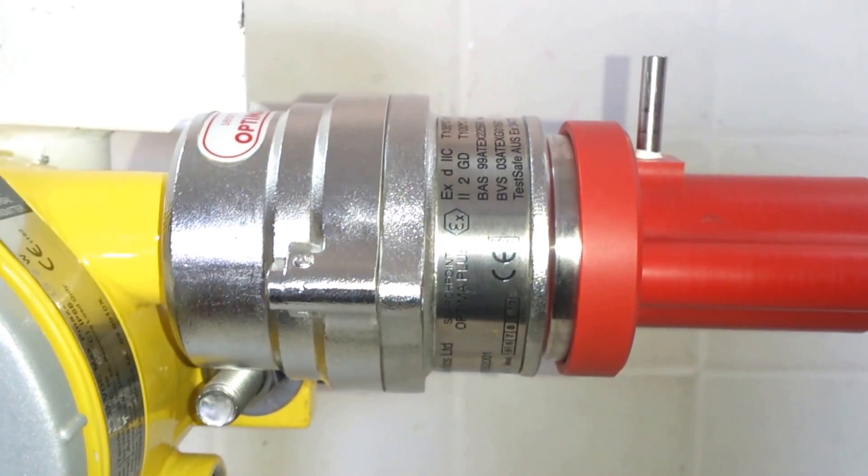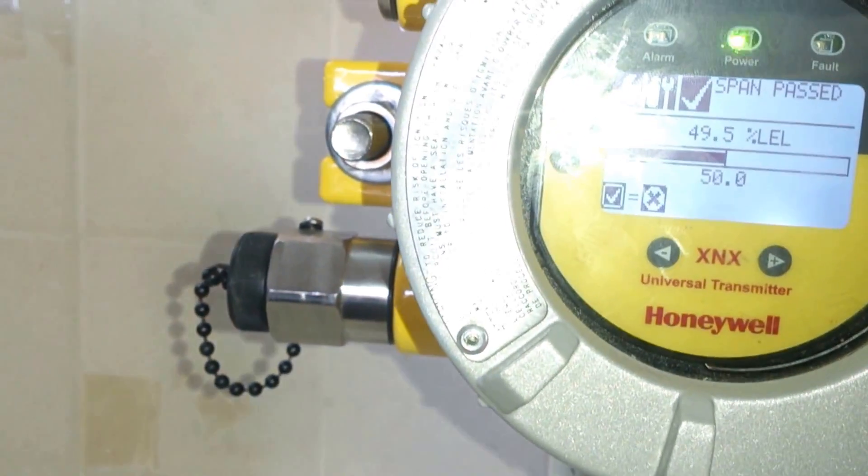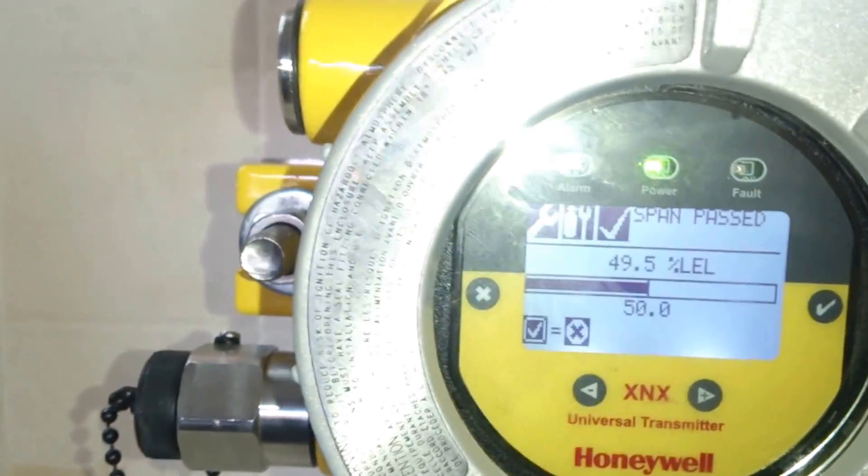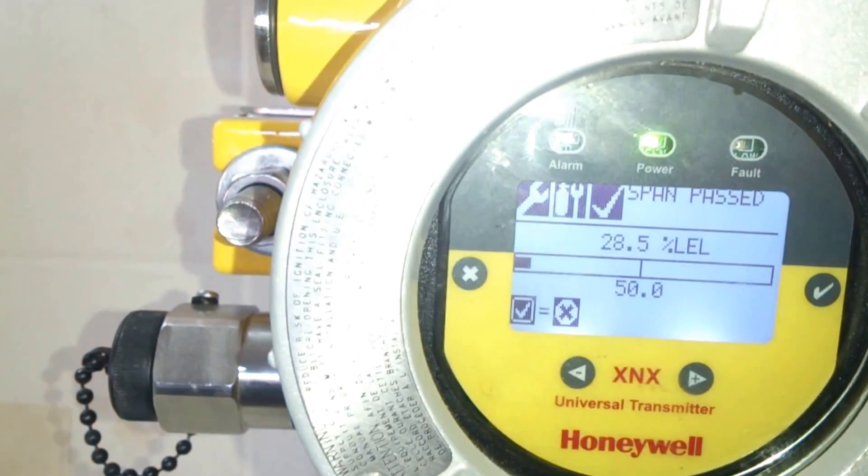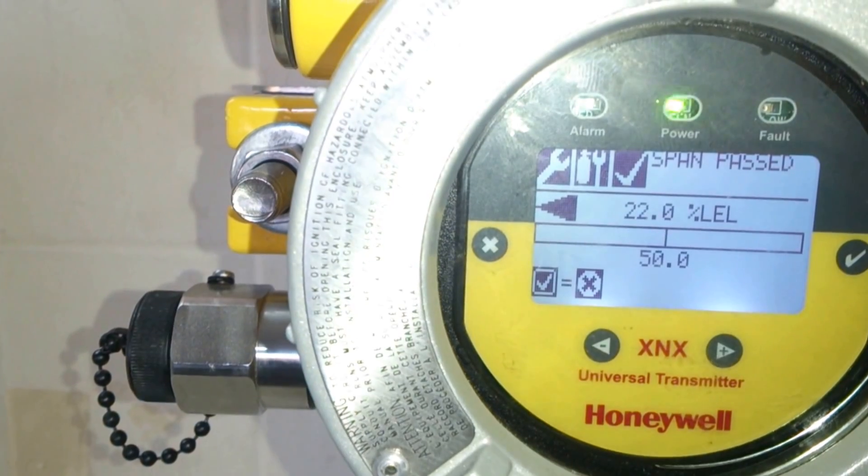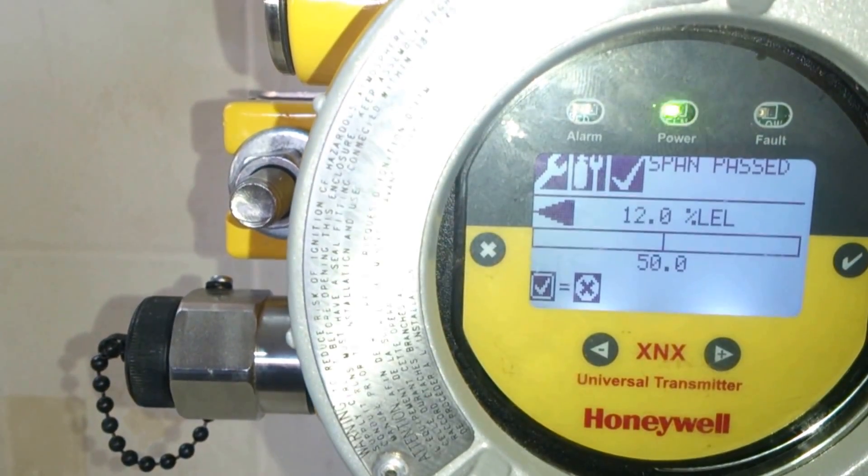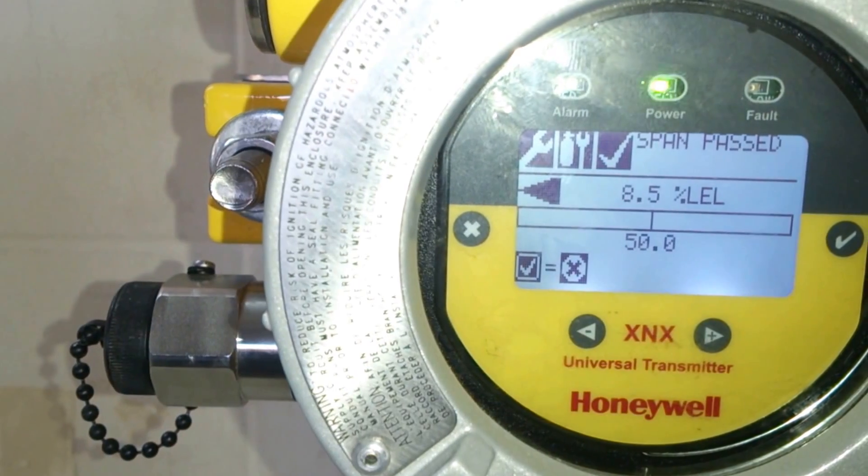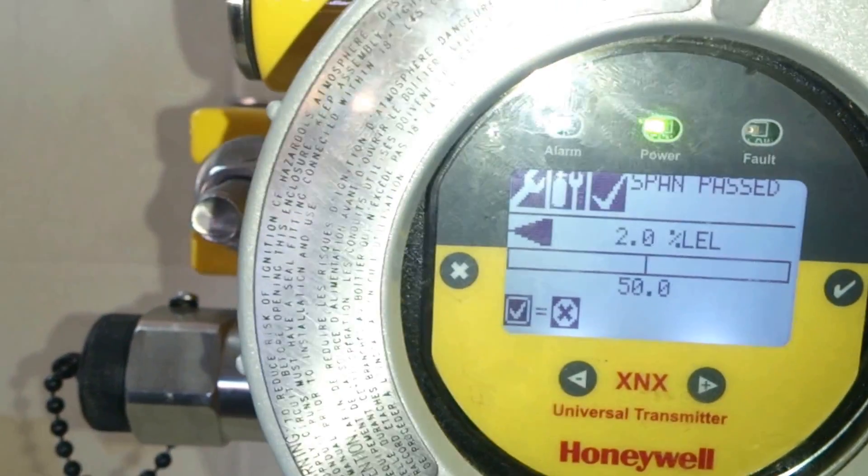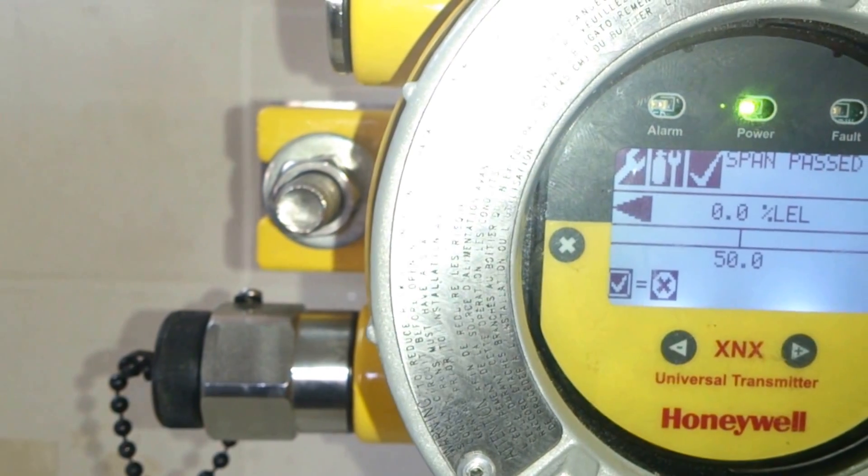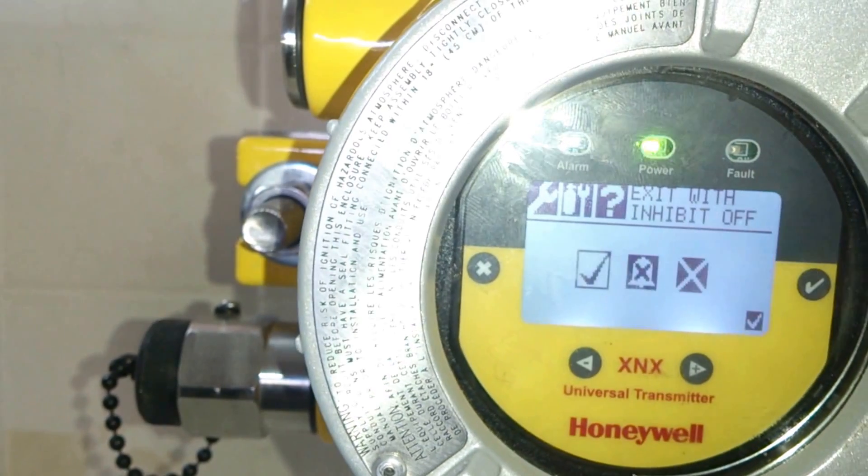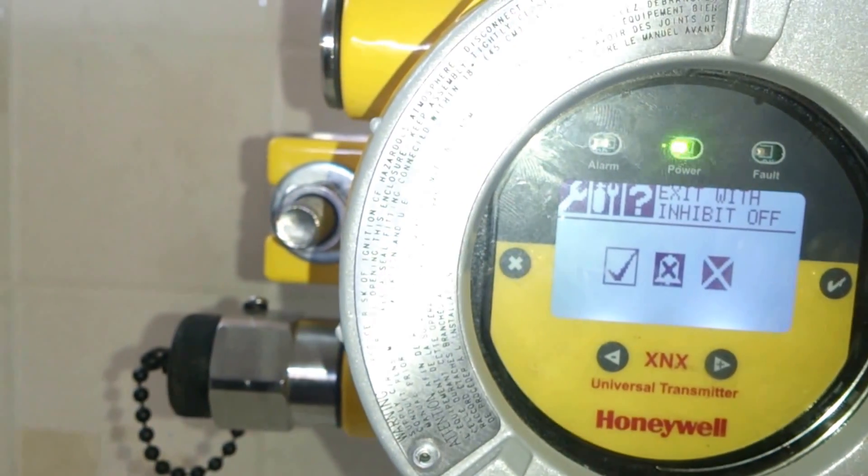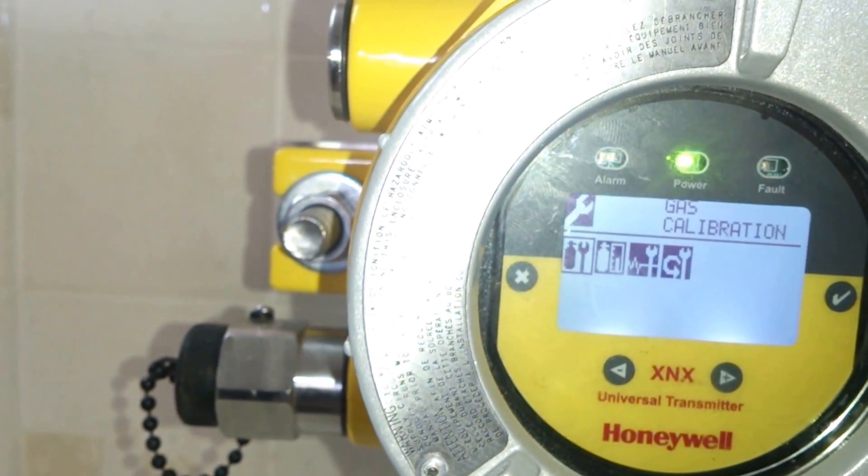The calibration cap is still connected. Now you can see the span is passed, i.e. the span calibration is accepted. Now we remove the calibration cap. Now wait for a stable value of the span until it reaches 0. Once it reaches 0, we save it and select exit with inhibit off for calibration purpose.